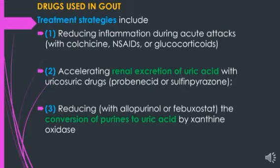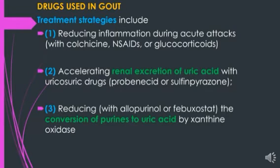There are two types of gout: acute gout and chronic gout. In acute gout, there is severe inflammation of the joints due to precipitation of uric acid crystals. NSAIDs like indomethacin are the drug of choice in acute gout due to better tolerability.